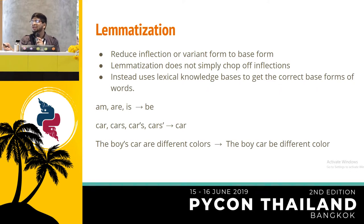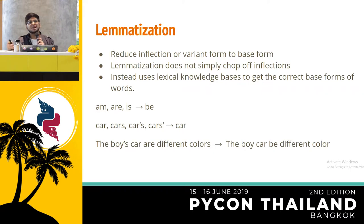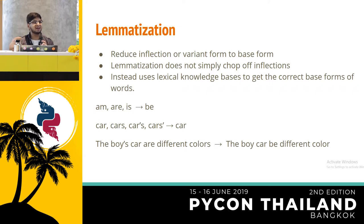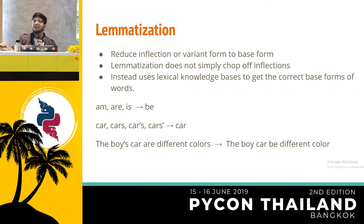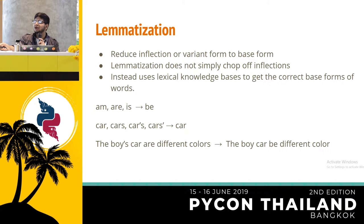Next is lemmatization. In lemmatization, every word needs to be lemmatized before further processing in NLP. We reduce each word from its inflected variant form to its base form using morphological analysis. For example, words like 'am', 'are', 'is' are converted to their base form 'be'. Similarly, 'car', 'cars', 'car's', 'cars'' are all converted to 'car'. In the phrase 'the boy, car are different colors' — 'boys' is converted to 'boy', 'different' remains 'different', 'are' is converted to 'be', and 'colors' goes to 'color'.